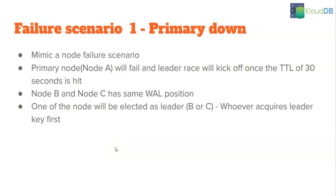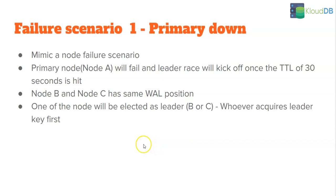We are going to look at two failure scenarios. Scenario one is a primary being down — we will mimic a node failure scenario. We have three nodes: node A, node B, node C. Node A is the primary and node B and node C are replicas. Both node B and node C have the same WAL position, so neither has any replication lag during the failover. Once node A fails, whichever of B or C acquires the leader key first will be elected as the leader, once the TTL of 30 seconds is hit.